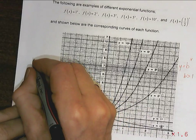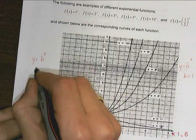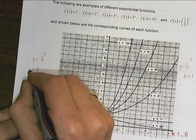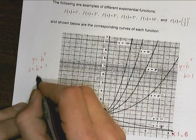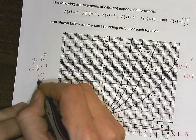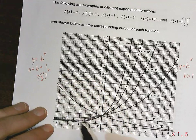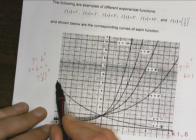or we're going to have y equals b to the x, where b is going to be between 0 and 1. So that would be like a fraction. And please note that these would be decreasing.